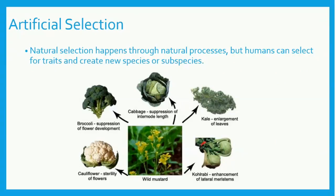Artificial selection happens often in our society. It's when humans select and breed for desired traits in an organism, which can create a new species or subspecies. In this example, wild mustard has been artificially selected and has evolved into five different species that humans consume. Pause the video and brainstorm with your classmates to make a list of artificially selected species. Domestic animals, including pets and livestock, as well as cultivated crops such as corn and soybeans, have been artificially selected by society.